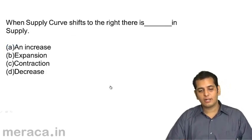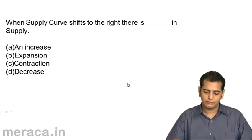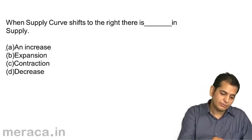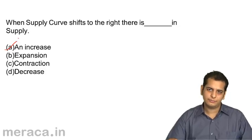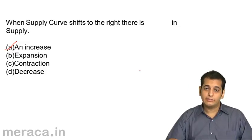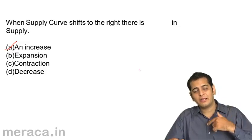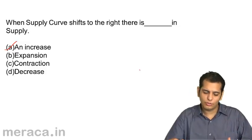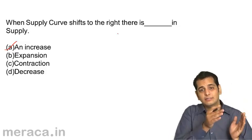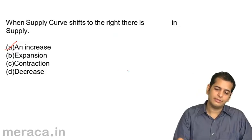Next: when the supply curve shifts to the right, there is a dash in supply. The answer is an increase in supply. We've already covered that a change in supply means the supply curve altogether shifts. When we move along the same supply curve, it is either expansion or contraction. But when the supply curve shifts, it is either a decrease or increase. When it shifts to the right, we call it an increase in supply.